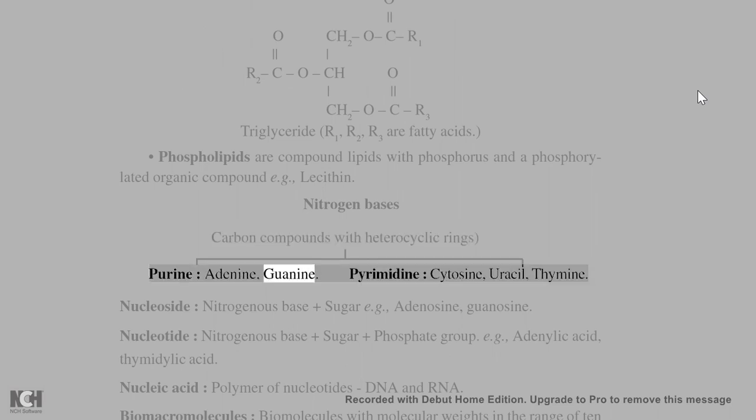Nitrogen bases are carbon compounds with heterocyclic rings. Purine: adenine, guanine. Pyrimidine: cytosine, uracil, thymine.